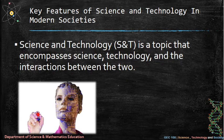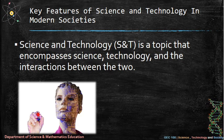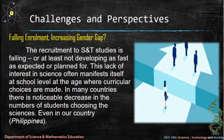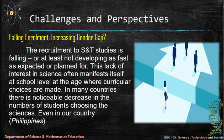Key features of science and technology in modern societies. Science and technology is a topic that encompasses science, technology, and the interactions between the two. Challenges and perspectives include falling enrollment and increasing gender gap. The recruitment to science and technology studies is falling, or at least not developing as fast as expected. This lack of interest often manifests itself at school level, where curricular choices are made, with a noticeable decrease in the number of students choosing the sciences, even in the Philippines.